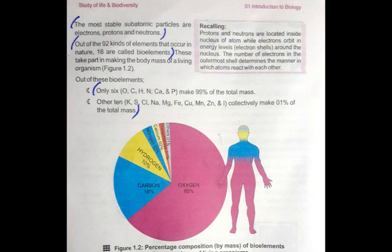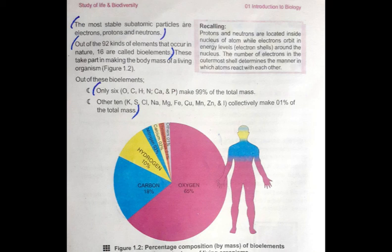You have to learn these names plus their percentages. There is also a recalling box which states: protons and neutrons are located inside the nucleus of the atom — as I mentioned when we started this topic — while electrons orbit in energy levels, i.e., electron shells. There are different shells around the nucleus in which electrons revolve. The number of electrons in those shells determines the manner in which atoms react with each other, so by knowing the number of electrons we can study the behavior of that atom.